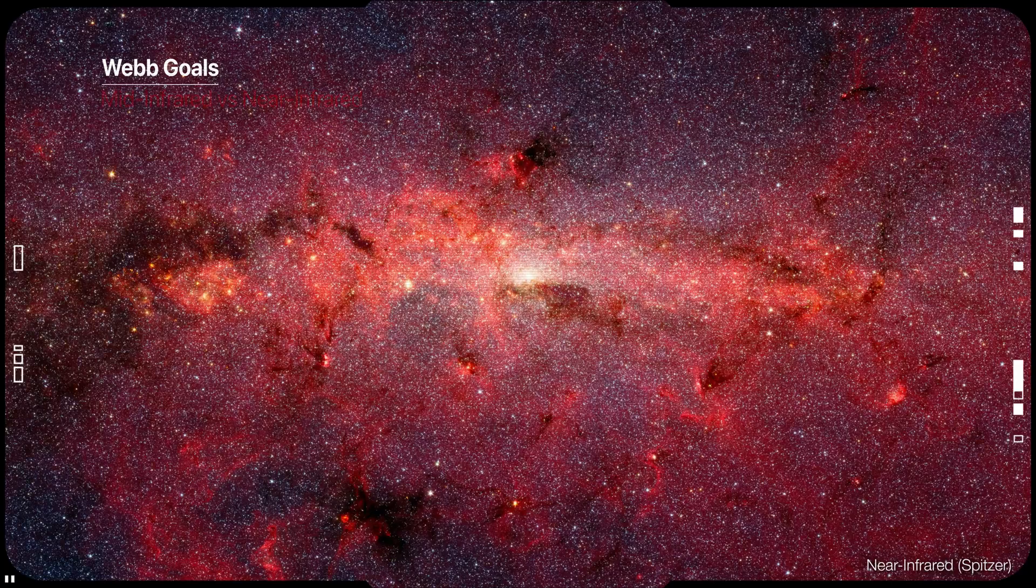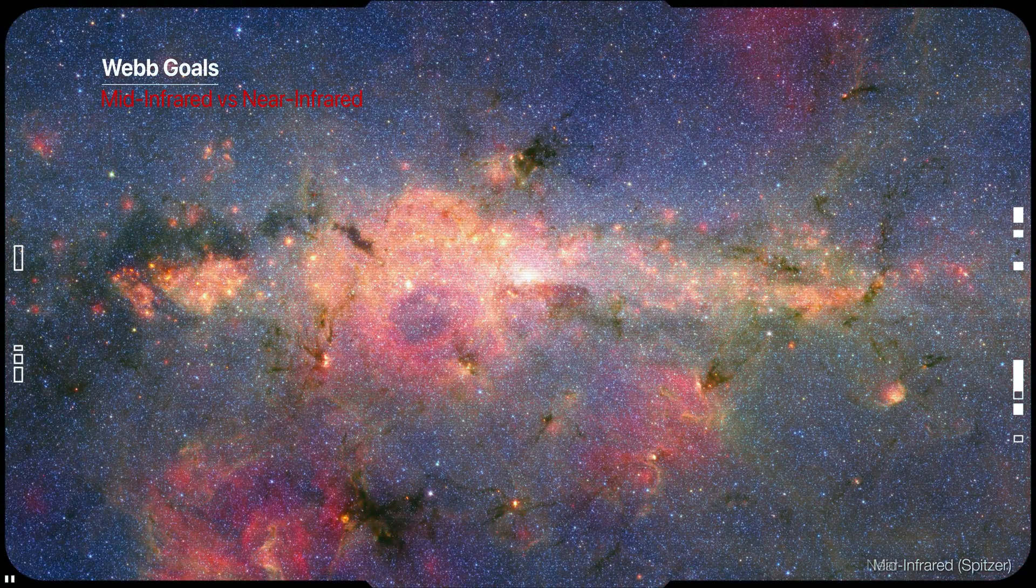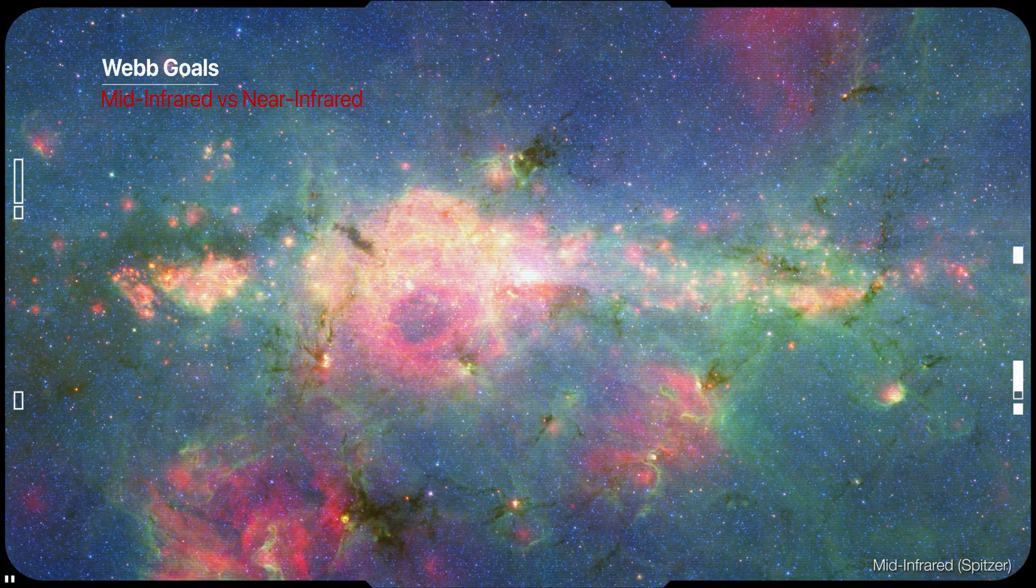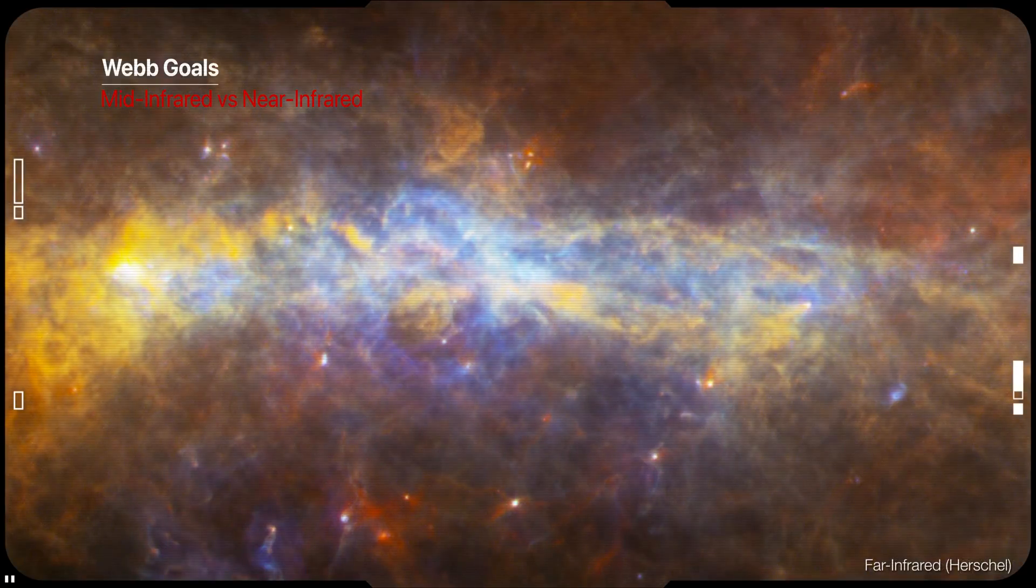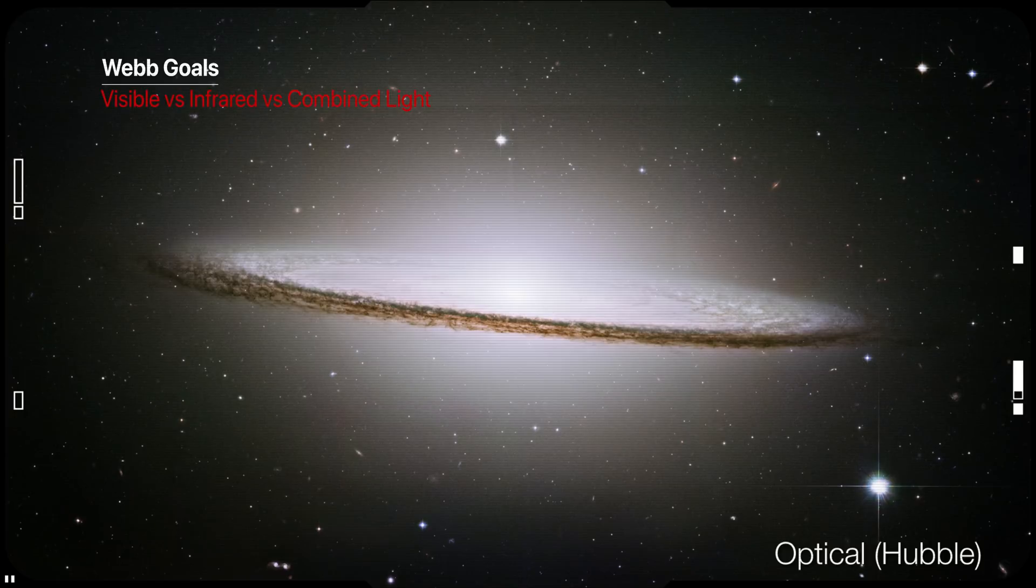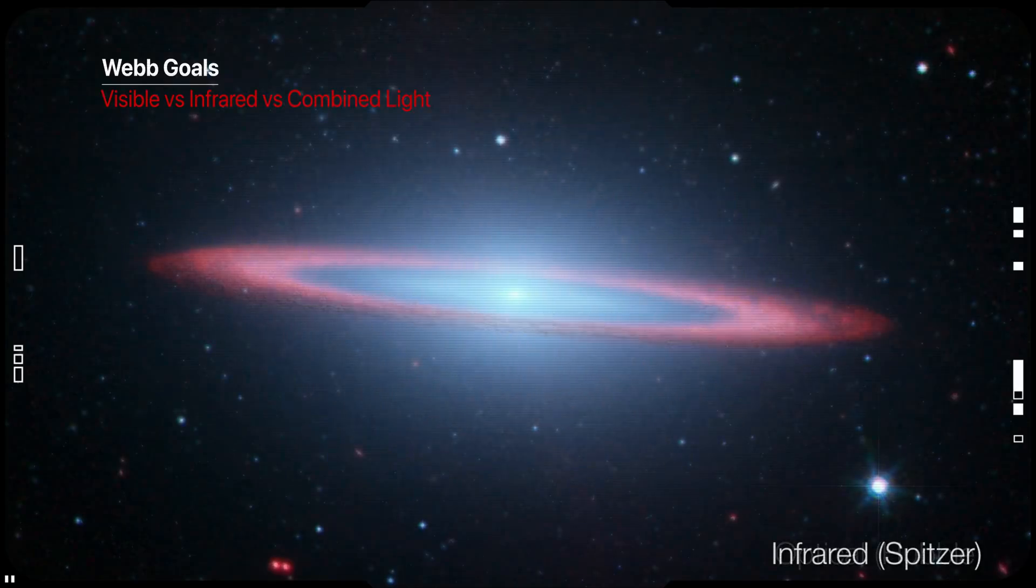Star and planet formation in the local universe takes place in the centers of dense, dusty clouds, obscured from our eyes at normal visible wavelengths. Near infrared light is less hindered by the small dust particles, allowing it to escape from the dust clouds. By observing near-infrared light, we can penetrate the dust and see the processes leading to star and planet formation.